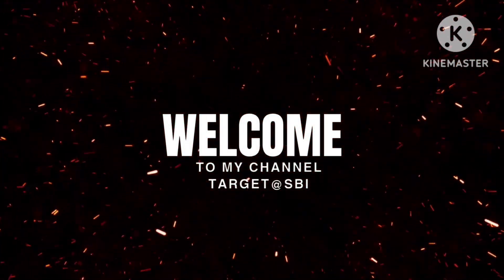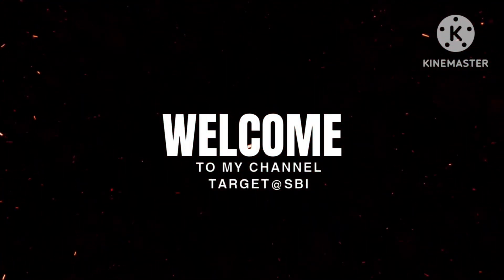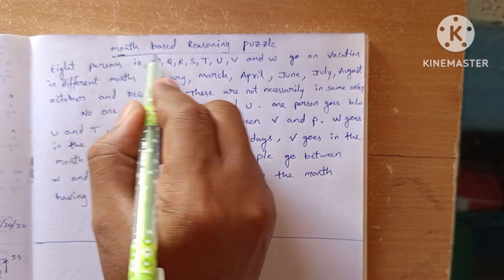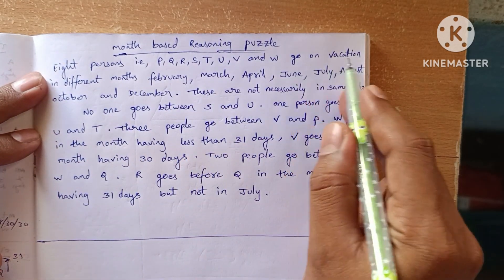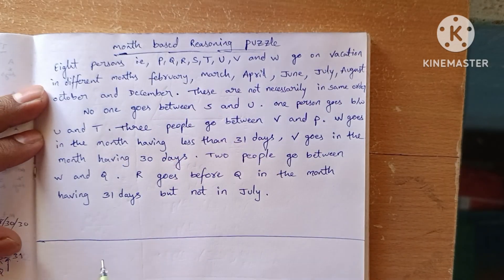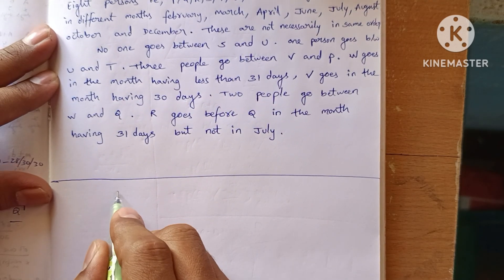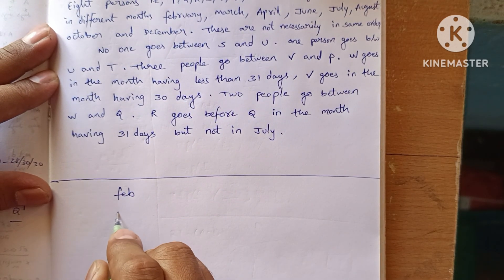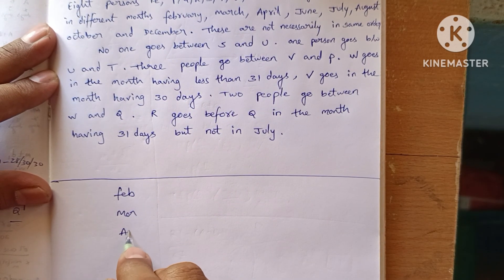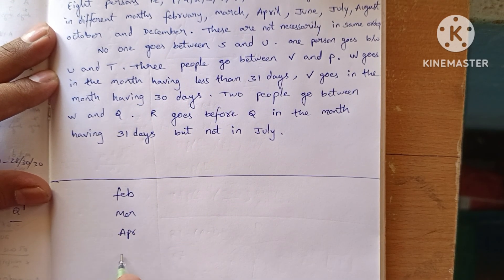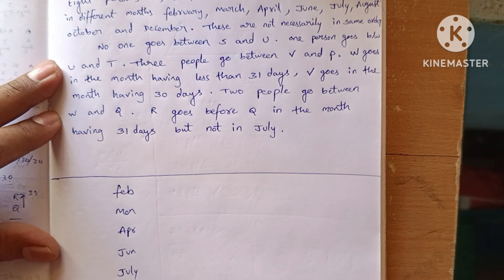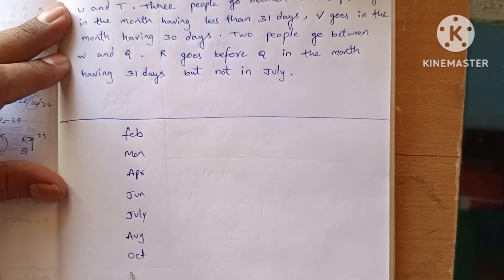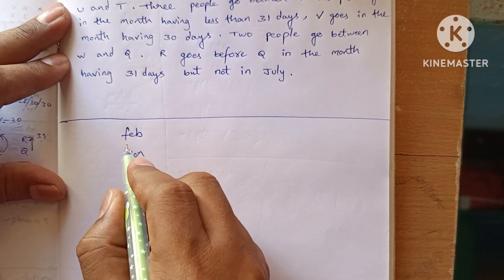Hello guys, welcome back to my YouTube channel Target SVI. Now we are going to see a month-based reasoning puzzle. Eight persons are going on vacation in different months. The months are February, March, April, June, July, August, October, and December.